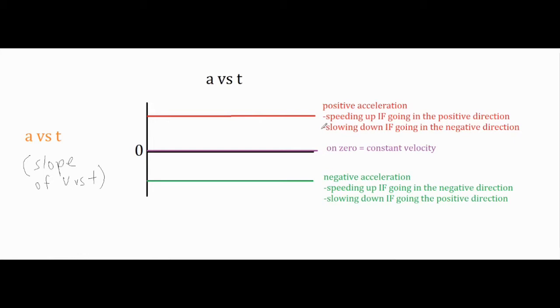On the other hand, it can actually be slowing down if it is going in the negative direction. For example, if your velocity is negative 10 meters per second and you are adding 3 meters per second every second, you are actually going to be decreasing your negative velocity. It's going to go from negative 10 to negative 7 to negative 4 and so on.